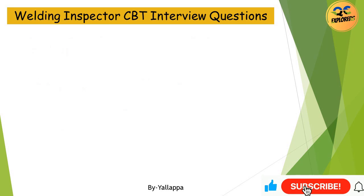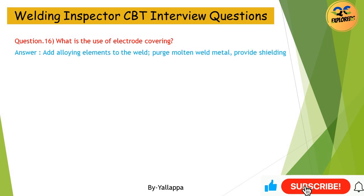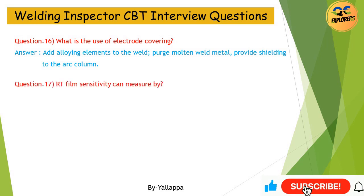Question 16: What is the use of electrode covering? Answer: It adds alloying elements to the weld, purges the molten weld metal, and provides shielding to the arc column. Question 17: RT film sensitivity can be measured by? Answer: IQI — Image Quality Indicator.